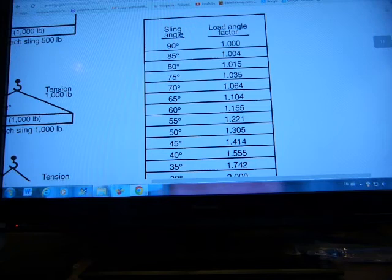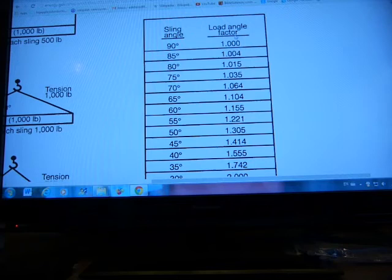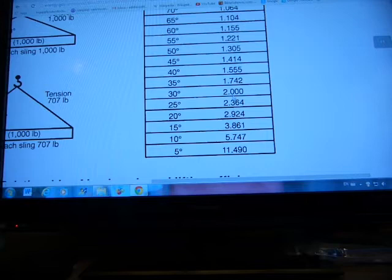What you see here is some reduction factors that they call load angle factors. Yes, it's a reduction factor due to the angle of the sling. You can see angles there, but you can't measure these angles on the job site, so this table here is somewhat limited in use.